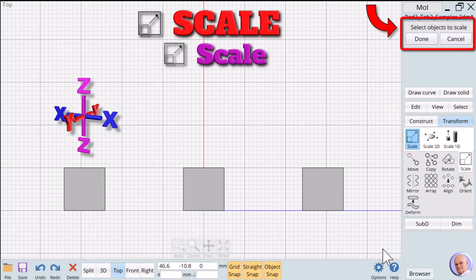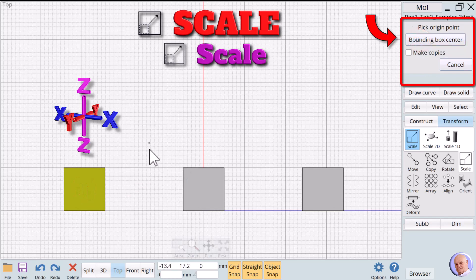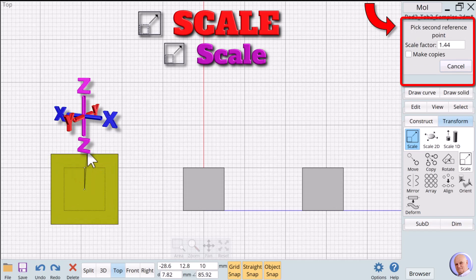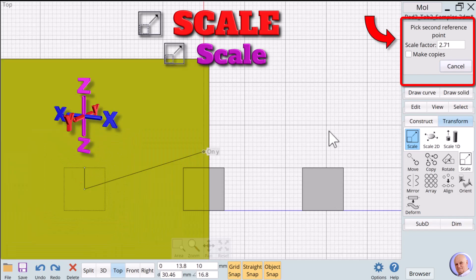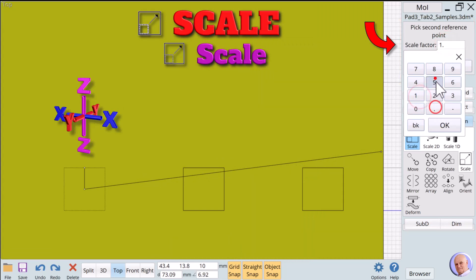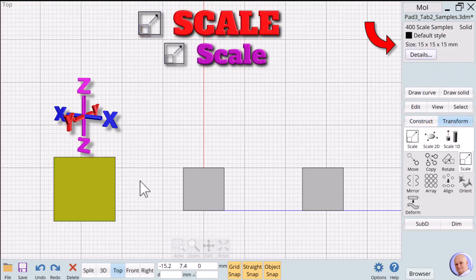Scale. This method scales in all three dimensions at the same time. The steps are select objects to scale. We'll select the leftmost 10 by 10 by 10 cube. Pick origin. While we can actually choose any point on the screen, we usually select the center or an edge of the object. The placement will affect the direction of the scaling operation. Pick first reference point. Again, this is usually a point on the edge of the object. Pick second reference point. As we move our mouse, the object changes size in all dimensions. For more precision, we can enter a value in the scale factor text box. We'll enter a value of 1.5 and the object is scaled to 15 by 15 by 15.